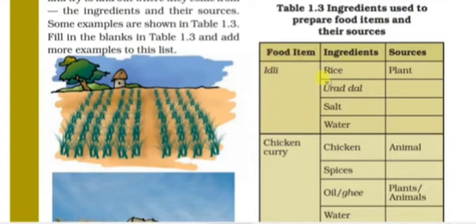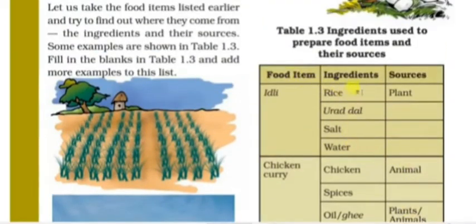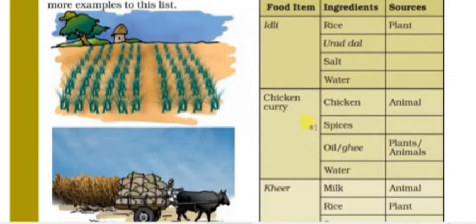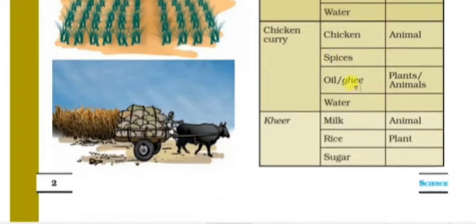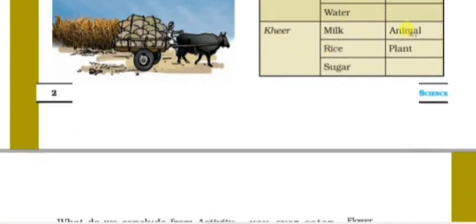For example, idli is made from ingredients like rice, red lentils, salt, and water. For chicken curry, chicken comes from animals. Spices and oil come from plants. Sugar comes from sugarcane, which is a plant. Rice comes from plants, and salt is obtained from the sea.